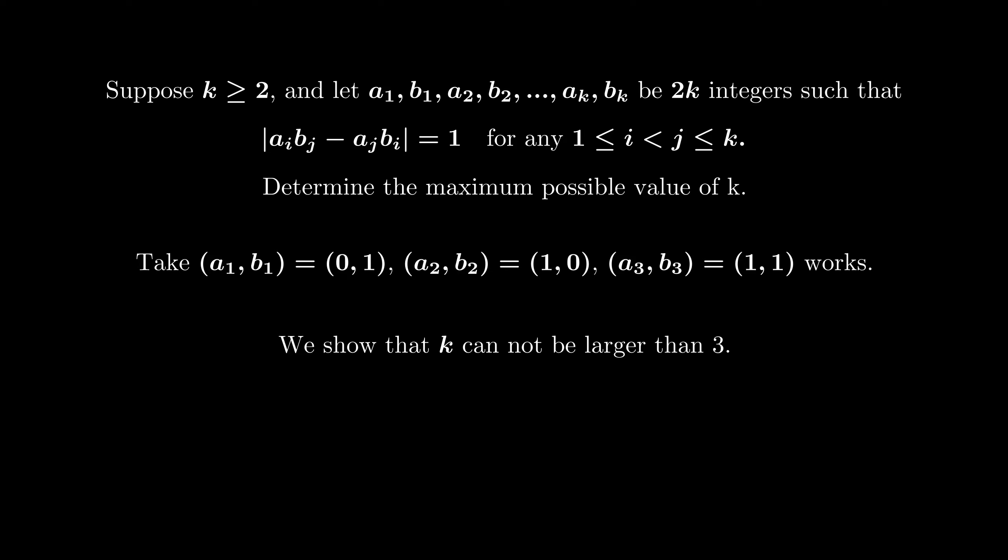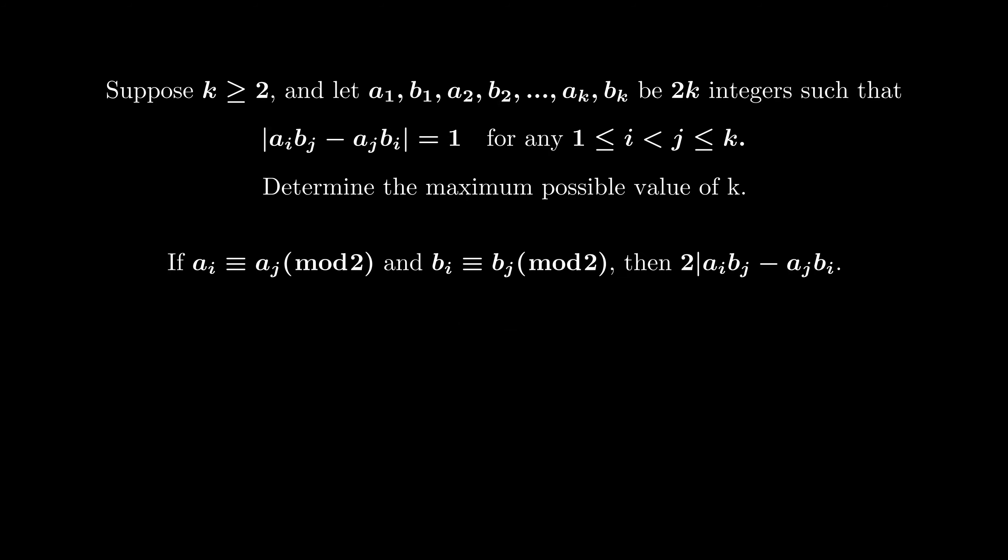The hint basically lies in the binary solution that I am giving, which is to consider the parity of the numbers. First, we remark that if ai and aj, bi and bj, both have the same parity, then 2 divides their cross product, which cannot happen. This means that the residuals of the couple (ai, bi) modulo 2 are all different.